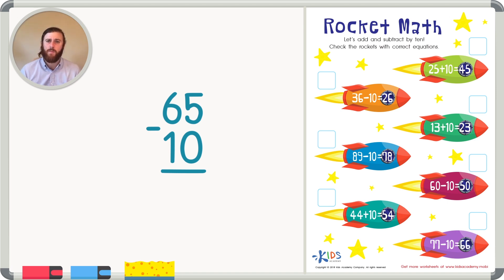And now 6 minus 1. What's just 1 less than 6? Well that's just 5. So 65 minus 10 is just 55. The 5 stayed the same and the only number that changed was 6. It became 1 less and turned into a 5.